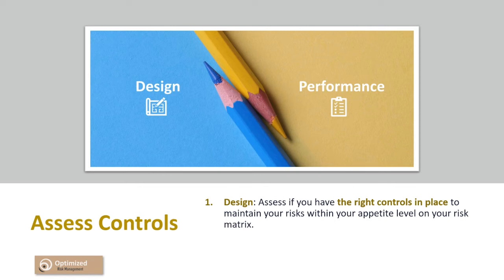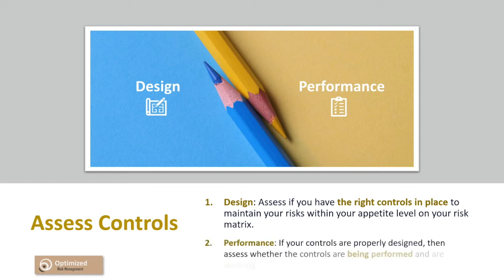However, if your controls are properly designed, then assess the performance of your controls. Performance relates to whether the controls are being performed and working as intended. Do not skip this step because if your controls are not performing as intended, it's equivalent to not having any controls in place — and by default, your risk level is the inherent risk level assessed in the first step. If this is the case, proceed to determining your mitigation actions. Otherwise, now you can document your residual risk.